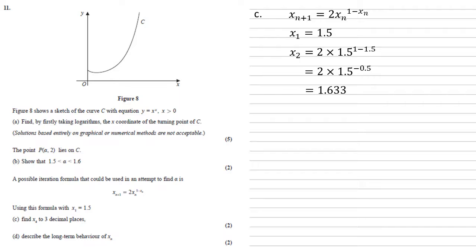At this stage, I would now use the answer button on my calculator and type in 2 times answer to the power of 1 minus answer. The beauty of this is now if you press equals, it will give you x3. If you press equals again, it will give you x4 without having to type the whole equation in over and over again.